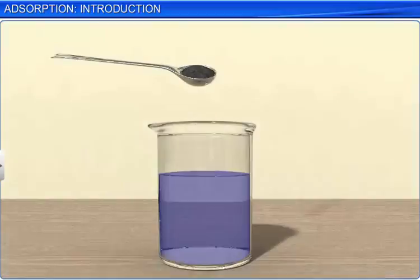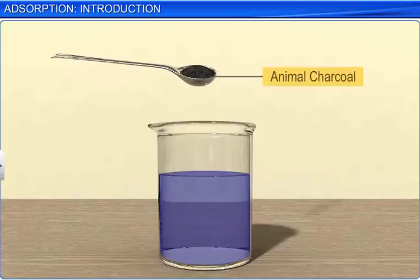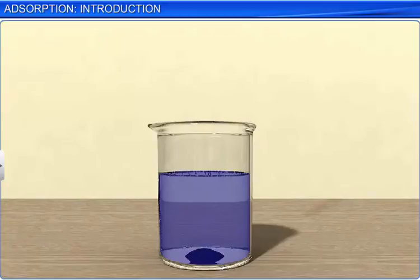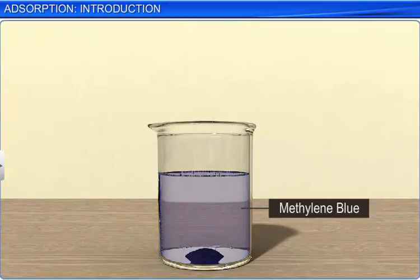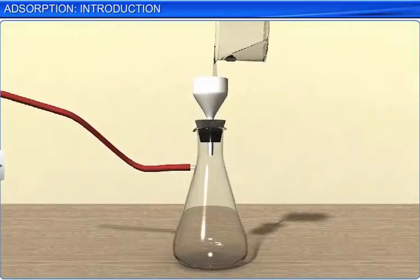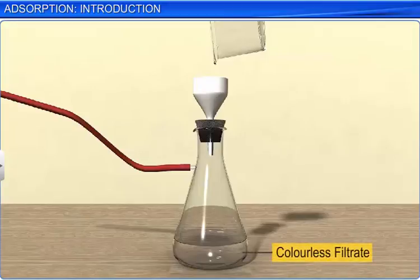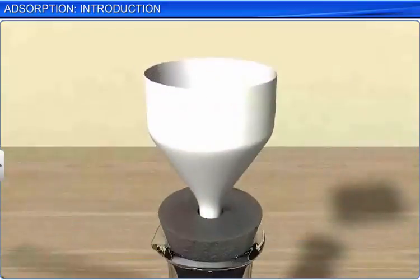Let's look at one more example. Add some activated animal charcoal to a dilute solution of an organic dye, methylene blue. Stir the solution thoroughly and then filter it. You will find that the filtrate thus obtained is colorless. This is due to the adsorption of the dye on the surface of the animal charcoal.